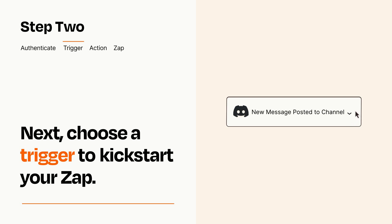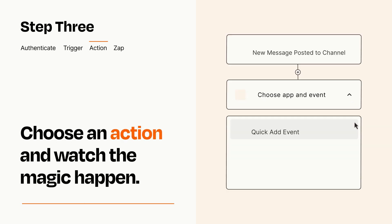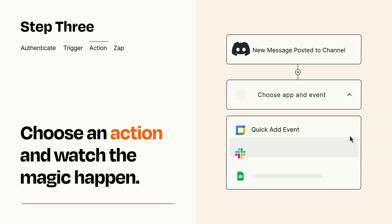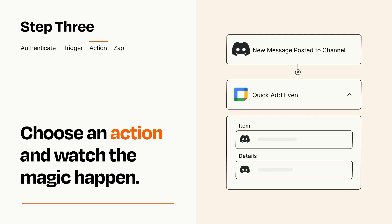This last part is where the magic happens. Choose the action you want to happen in your target app. You'll see a bunch of fields where you can specify the details of your Zap. You can type free form text or pull data in from your trigger step as needed.